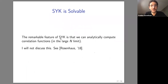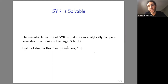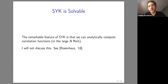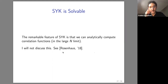The remarkable feature of SYK is that we can analytically compute correlation functions — it's completely solvable in the large-N limit. We can't analytically compute the full spectrum of the Hamiltonian, but we can compute fermion correlation functions. The details can be found in the literature. Let's take a break now, and any questions or comments can be discussed.